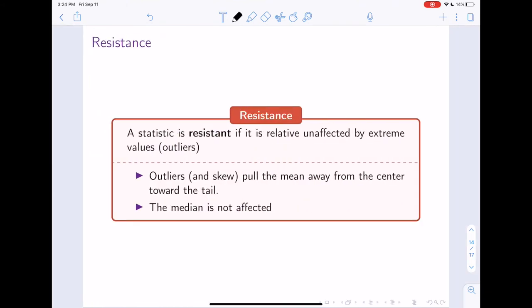We refer to this as resistance. A statistic is resistant if it is relatively unaffected by extreme values, in this case, outliers. Outliers and skew will pull the mean away from the center towards the tail. The median will not be affected. We just saw it before. If instead of having the value of 15, we had the value of 100, the median doesn't change. So the median is resistant. The mean is not. This is a very important concept in statistics.